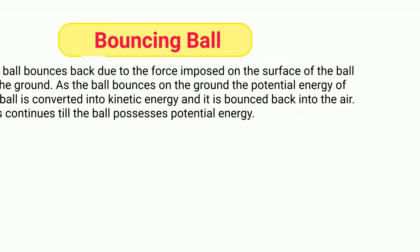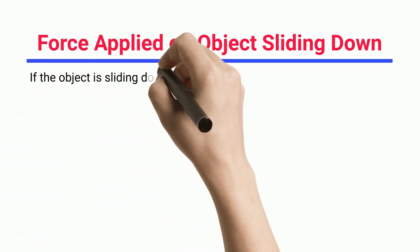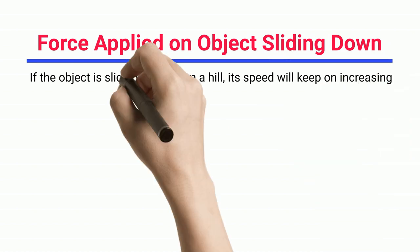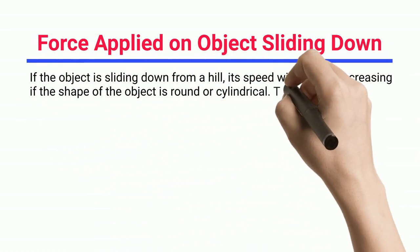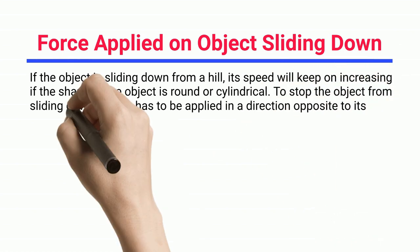Force applied on objects sliding down: If the object is sliding down from a hill, its speed will keep on increasing if the shape of the object is round or cylindrical. To stop the object from sliding down, a force has to be applied in a direction opposite to its motion.